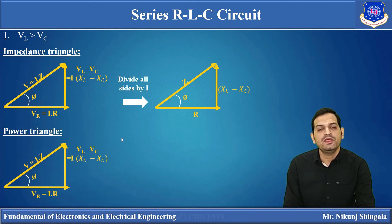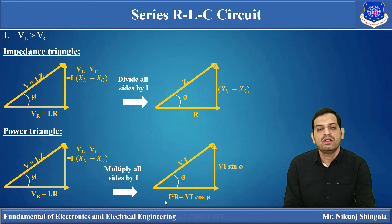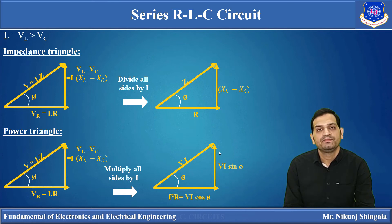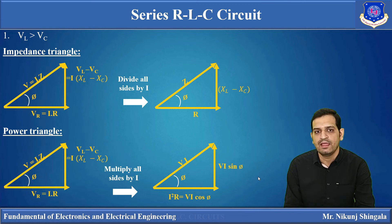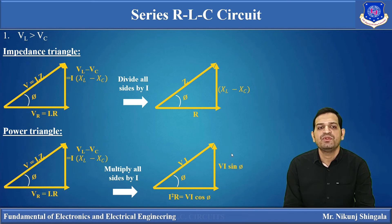Now the power triangle: starting from the voltage triangle, multiplying all sides by current I gives us power on every side. The hypotenuse becomes V·I, which is the apparent power. The vertical side becomes V·I·sin(φ), which is the reactive power. The horizontal side becomes V·I·cos(φ) = I²R, which is the active (true or real) power consumed in the circuit. This is how we draw the impedance triangle and power triangle from the voltage triangle for a series RLC circuit.